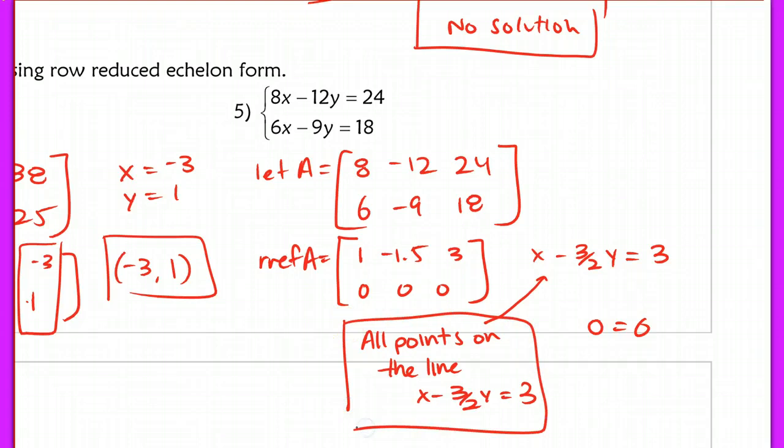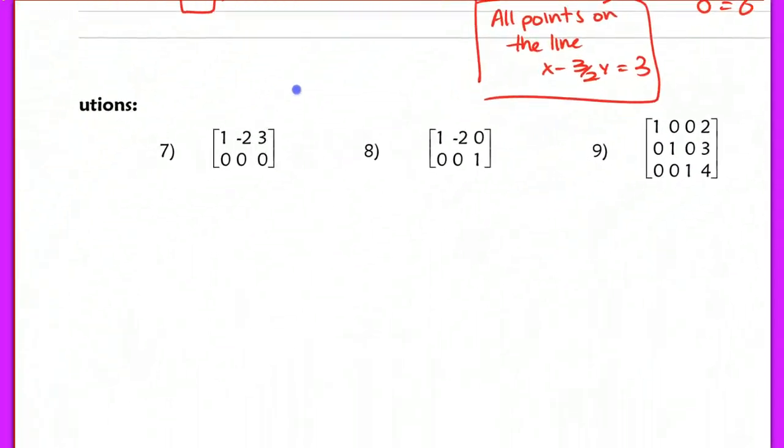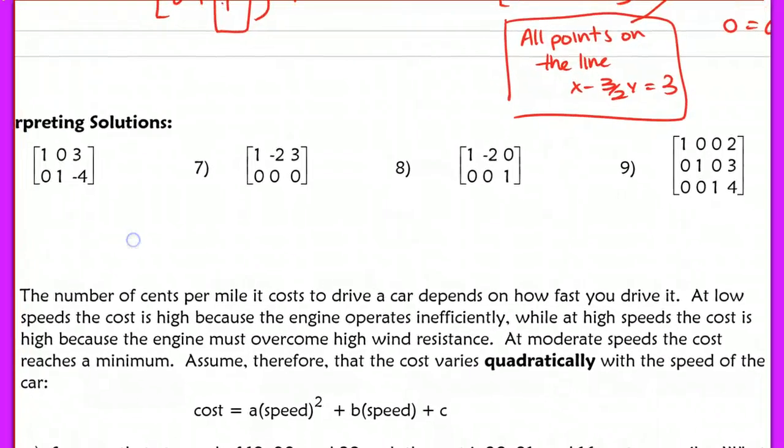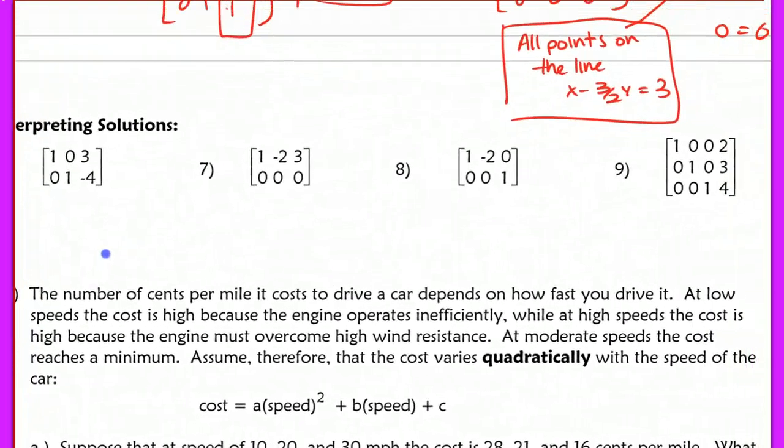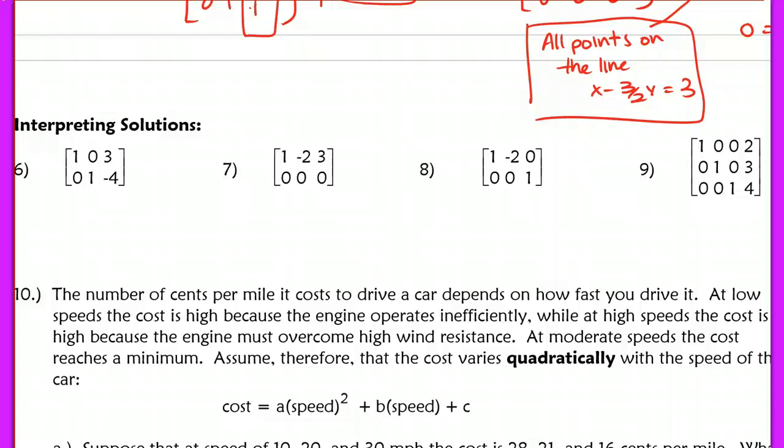This is infinite solutions for all points on the line x minus 3 halves y equals 3. You could also use any of these two lines as well, because those are all equivalent to x minus 3 halves y equals 3. That's how you would read each solution. On the back page here, I have four different problems where you're interpreting the solution. I would like you guys to try to pause the video at this point, do these questions on your own, and check with the key.